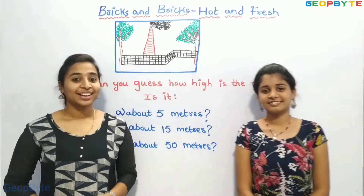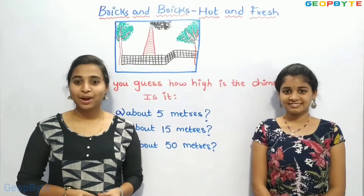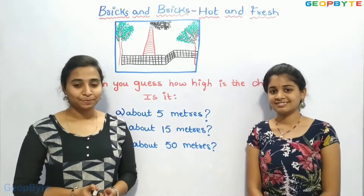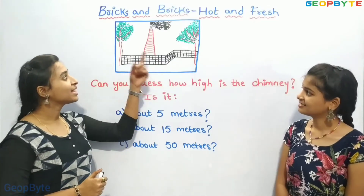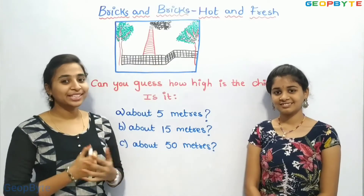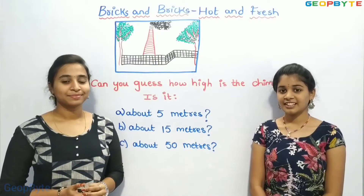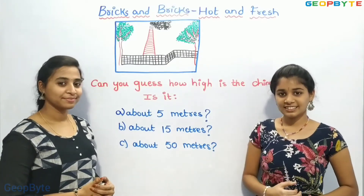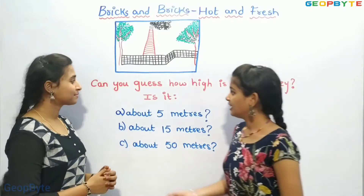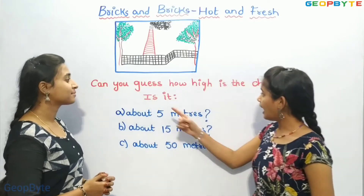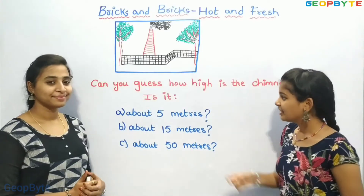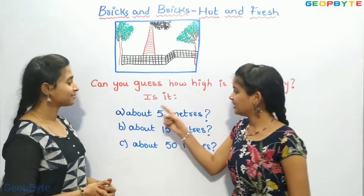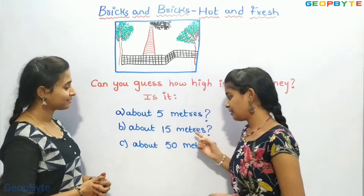Children, Ganesh and Sahiba live near a kiln where bricks are made. This is a kiln where bricks are made. Can you guess how high is the chimney? Is it about 5 meters, 15 meters, or 50 meters?